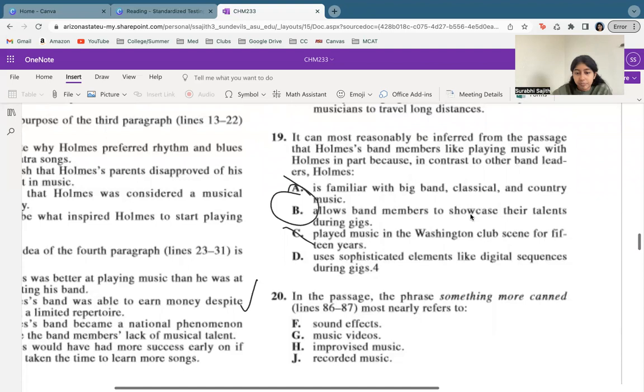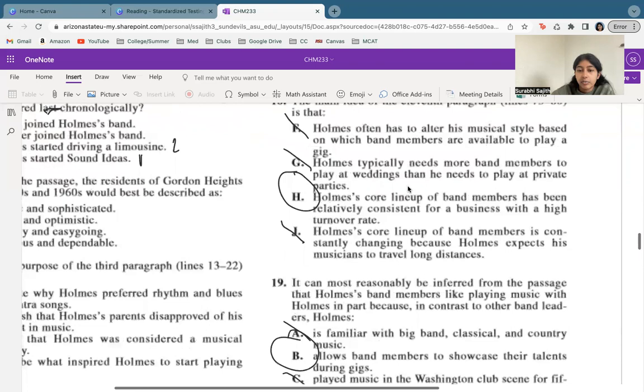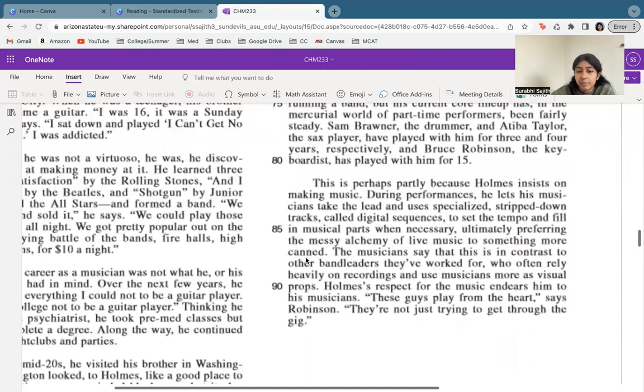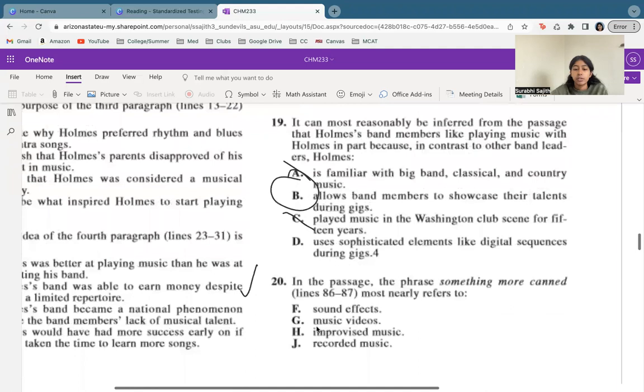All right. And then in the passage, the phrase, something more canned, if we look at that, it's right here, ultimately preferring the messy alchemy of live music to something more canned. So in this case, we're talking about live music. And if we're comparing it to something, we're probably comparing live music to recorded music. So that's something to keep in mind right here. So which one shows that recorded music? J. So that's why J is our best answer here.